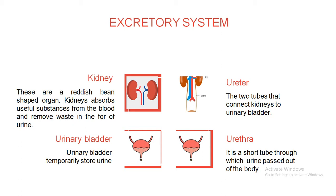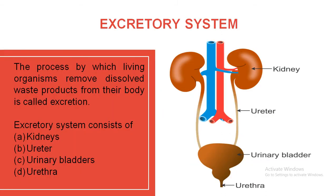Next is the urinary bladder. The urinary bladder is a sac-like structure which temporarily stores the urine. Once the bladder is filled completely, it sends a message to your brain for the excretion process. With the help of the urethra, the urine is then removed out. Urine is a combination of 95% water, 2.5% urea, and 2.5% other waste.